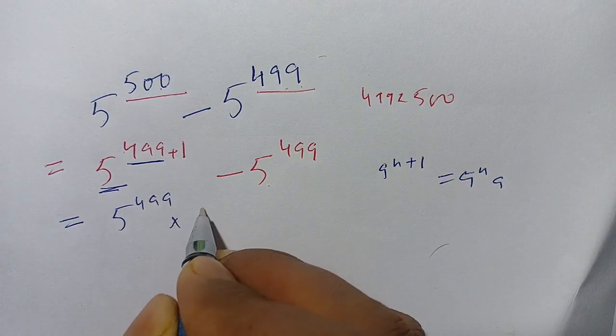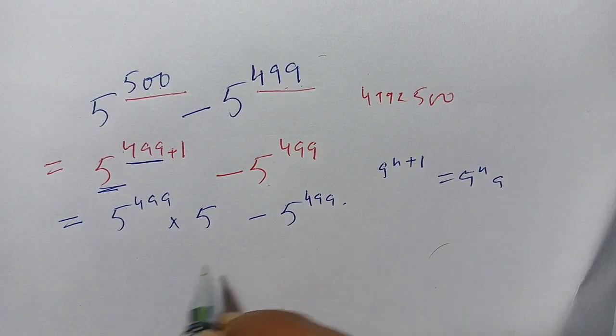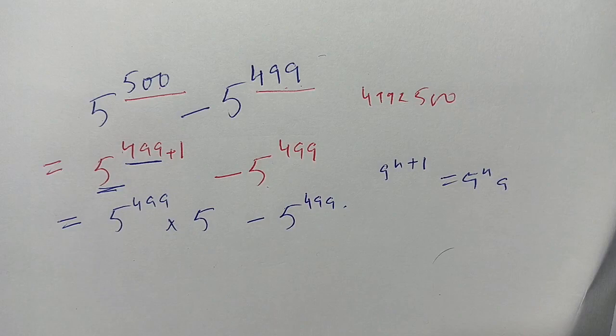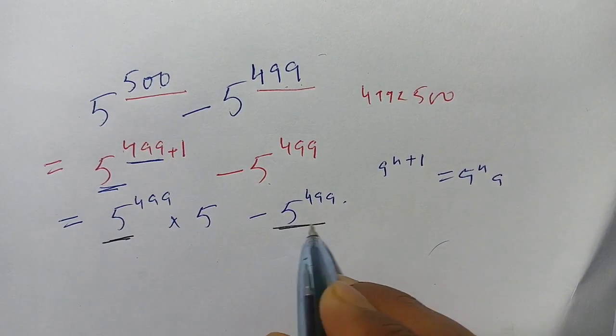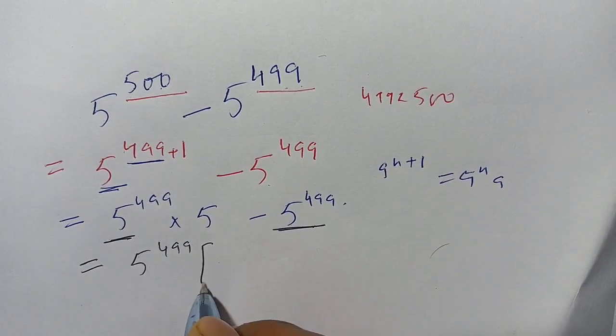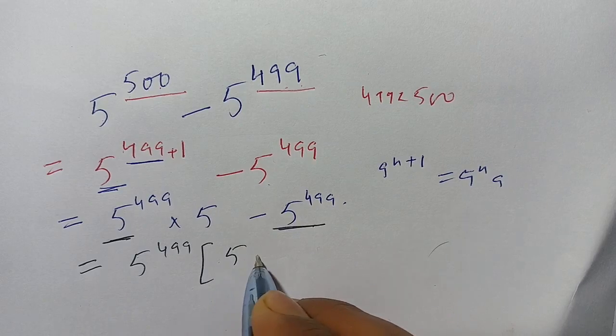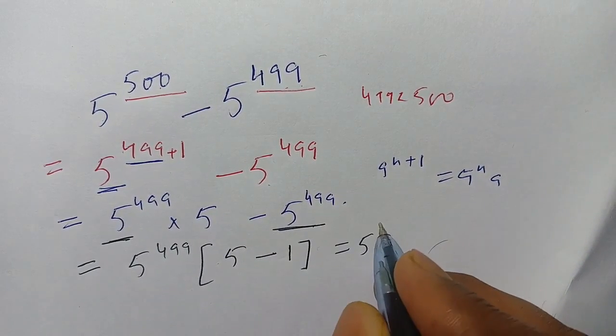You see here 5 power 499 from this term and from this term we can take out. We get 5 power 499 and the remaining is 5 minus 1.